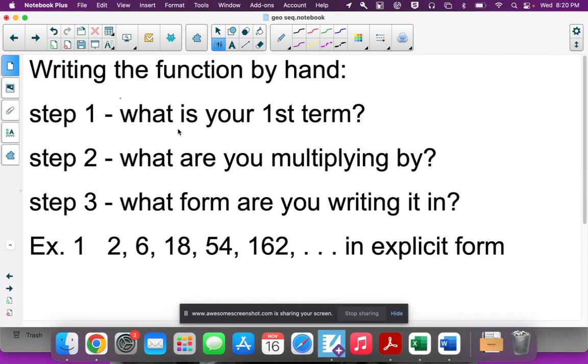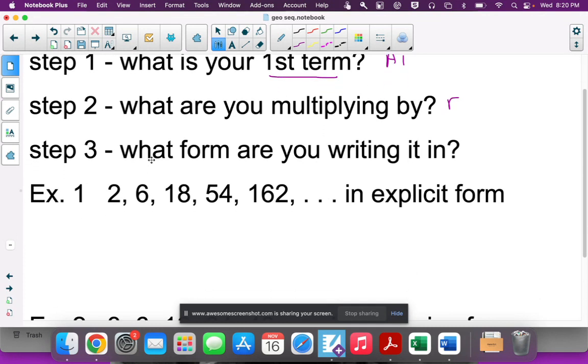What is your first term? What are you multiplying by to get your r? What form are you writing it in - explicit or recursive? This one's the same thing we just did. First term is 2, and our common ratio is 3. We're going to write it in explicit form. A_n equals your first term times your base, 3, raised to the n-1.